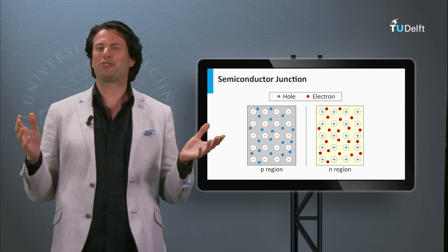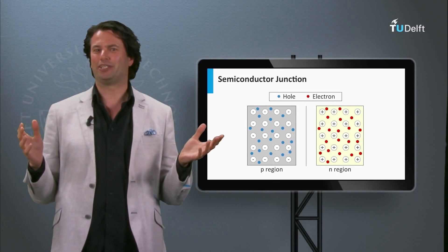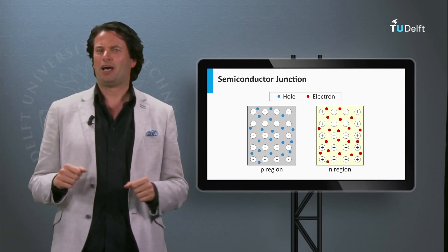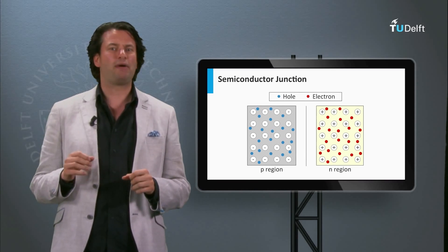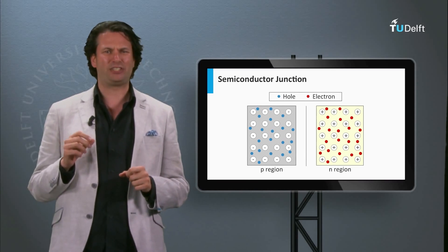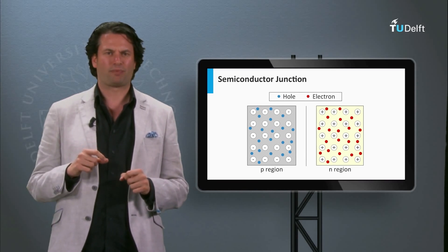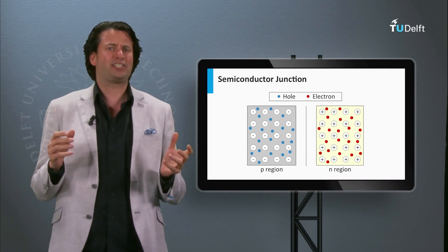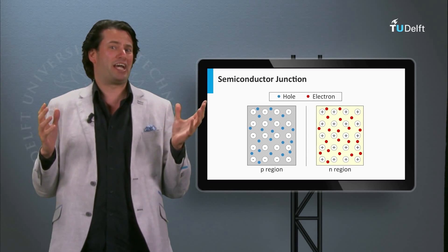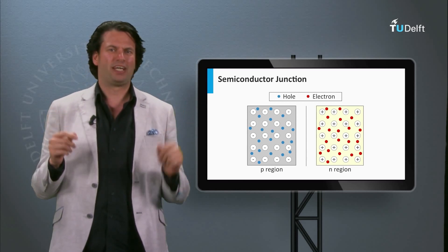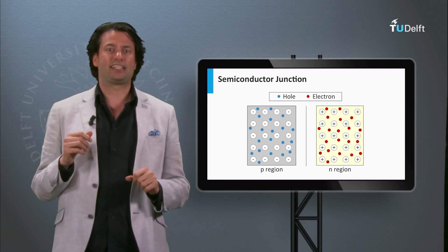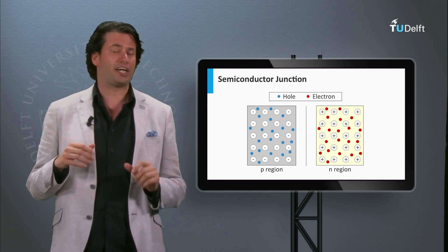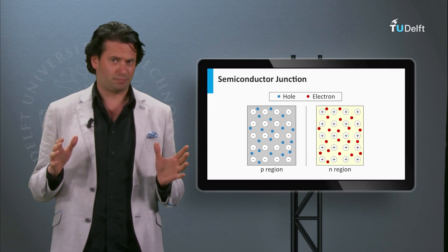Finally, we are going to build a solar cell. Most solar cells are based on a p-n junction. The question is, what is a p-n junction? We take as an example the case for silicon.